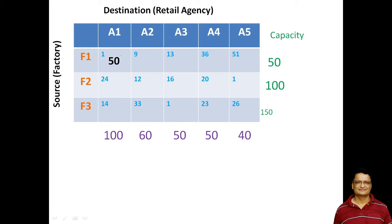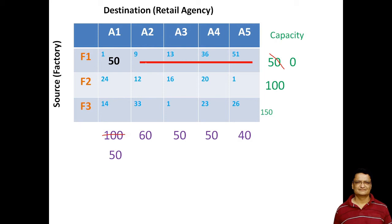The capacity of F1 is 50 and the requirement from A1 is 100. So we can only allocate 50 units. I have allocated 50 units here. Now the capacity of F1 will be exhausted, so this 50 becomes 0 and this 100 will become 50. We will not be able to allocate anything further from factory F1, so I have marked it as red.